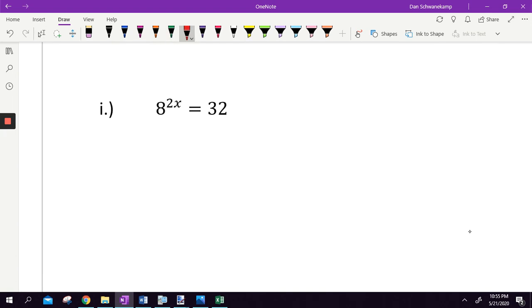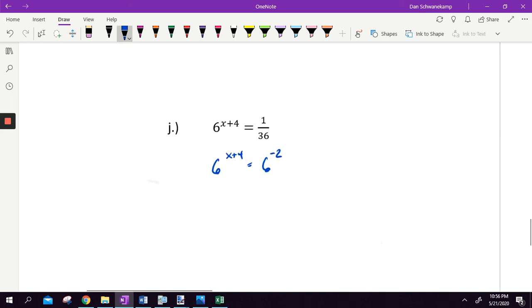Letter I. What base could I rewrite for 8 and 32? 8 and 32. Let's go with 2. 2 cubed gets me 8 times the exponent that's already there. And 2 to the 5th gets me 32. Cancel the bases and solve. We're done. Letter J. Ooh, a tough one. 6x plus 4 and 1 over 36. What base would we work here? This time, not 2, 3, or 5. 2, 3, or 5 isn't going to help us. Instead, we want to use 6. Because I know that I could rewrite 1 over 36 as 6 to the negative 2. Negative to flip it, and 6 squared gets me 36.